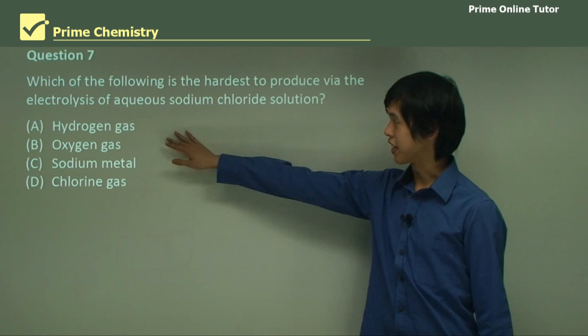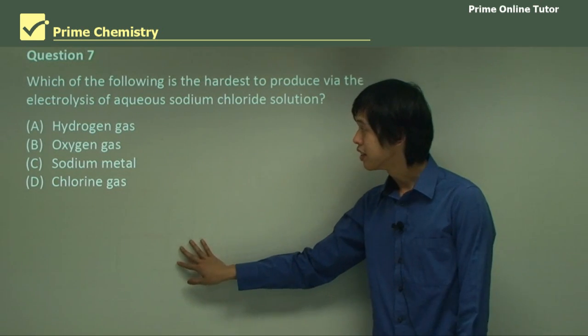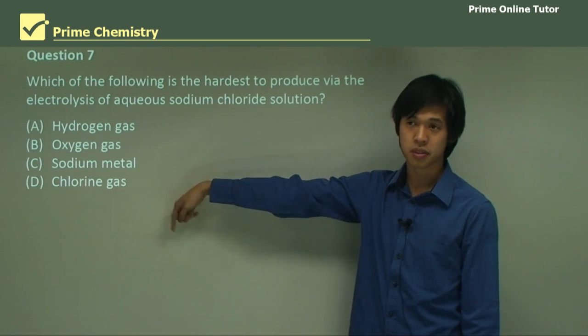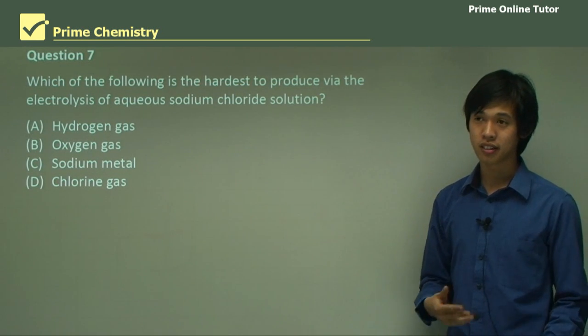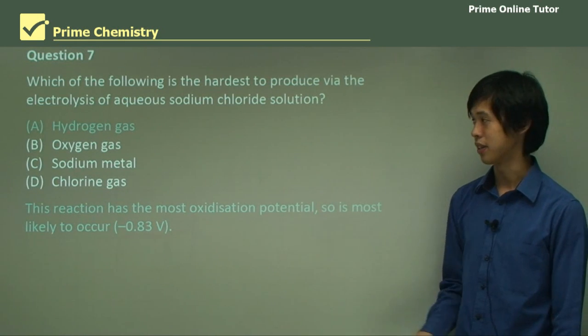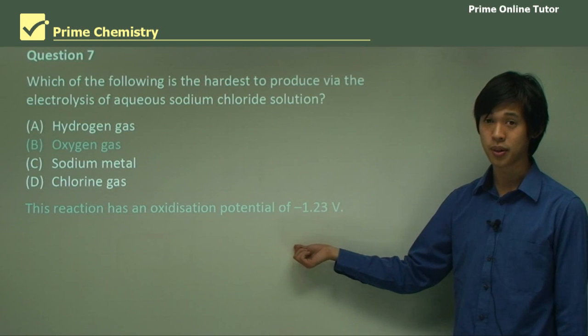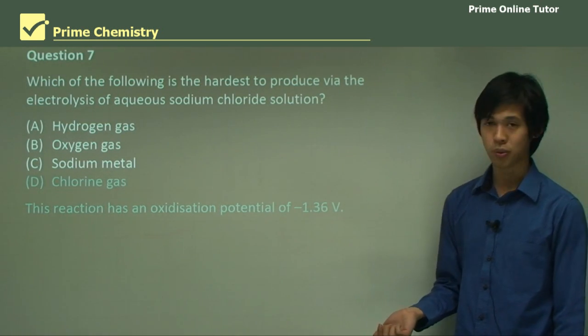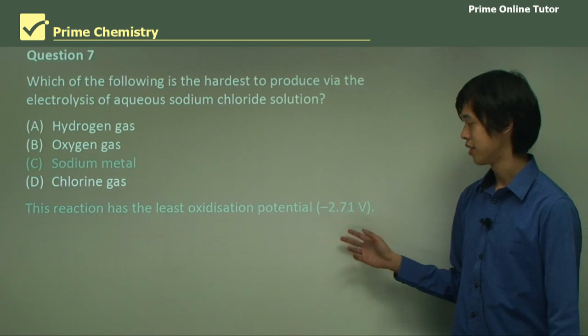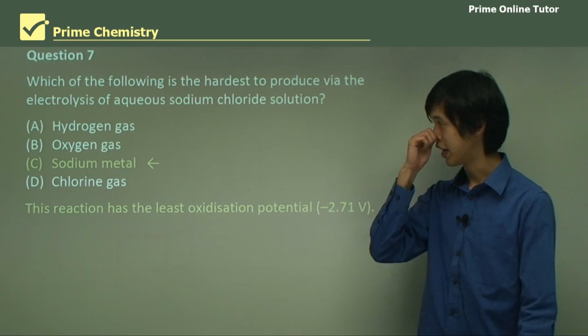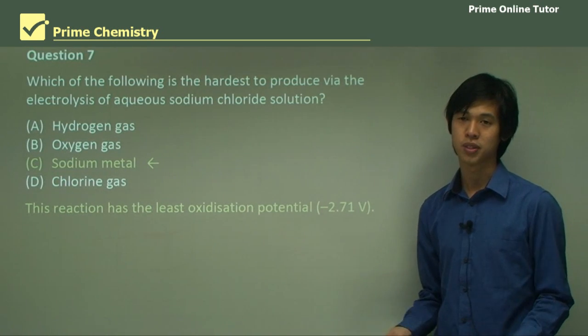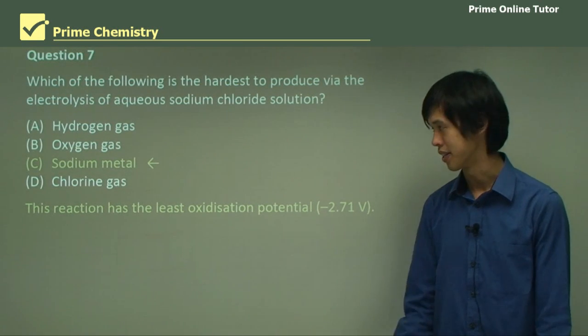Which of the following is the hardest to produce via the electrolysis of aqueous sodium chloride? Which one is the hardest? It's probably not hydrogen or oxygen gas - this happens pretty regularly. Chlorine gas happens pretty regularly as well. Having pure sodium metal produced at all is very difficult, so it's definitely going to be C. This reaction has the least oxidation potential at -2.71V. This one has the biggest magnitude, so this one will be the least favorable one to produce because it takes so much energy. And you can feel that based on how easy they are to form in real life. Sodium metal will rarely form pure sodium, whereas you can see hydrogen gas all the time, oxygen gas all the time, and chlorine gas all the time.